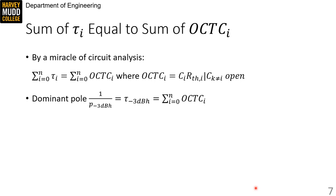Fortunately, this OCTC technique got written, and it used some circuit wizardry to show that the sum of τi is equal to the sum of OCTCi, where each OCTC is a capacitance, multiplied by the thevenin resistance seen from the capacitor terminals, under the condition that all other capacitors are open circuits.